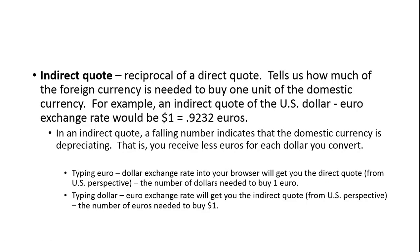The other way to quote is the indirect quote, which is the reciprocal of a direct quote. Whether it's a direct or an indirect quote depends on which country you're in. From a US perspective, the indirect quote tells us how much of the foreign currency is needed to buy one unit of the domestic currency. For example, an indirect quote of the US dollar/euro exchange rate would be one dollar equals .9232 euros. In an indirect quote, a falling number indicates the domestic currency is depreciating — you receive fewer euros for each dollar you convert, and if the dollar is depreciating, the euro is appreciating.